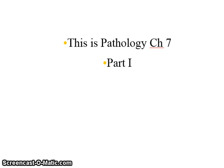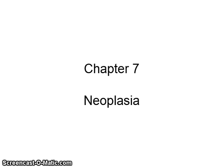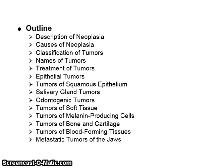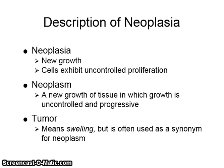Hello students, this is Pathology Chapter 7, Part 1: Neoplasia. Neoplasia is a new growth where the cells exhibit uncontrolled proliferation. A neoplasm is a new growth of tissue in which growth is uncontrolled and progressive.